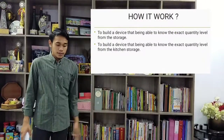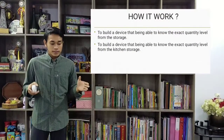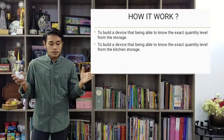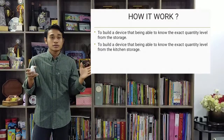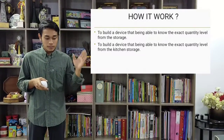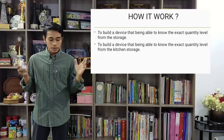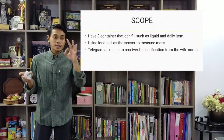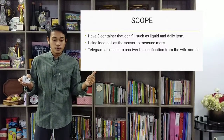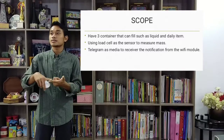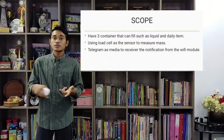Next, how does it work? The device is able to know the asset quantity level from the kitchen storage. My project has 3 containers. It can hold liquids and also daily items such as rice and sugar.